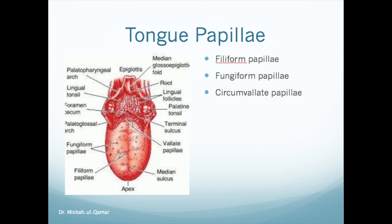Taste buds, which are smaller and closer to the tip of the tongue and larger toward the back, are found in relation to tongue papillae. There are four types of papillae: fungiform, circumvallate, foliate, and filiform.